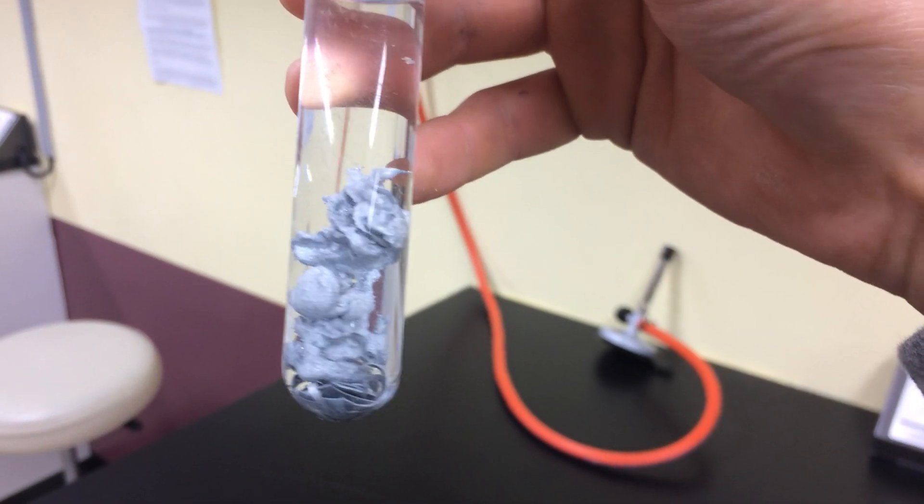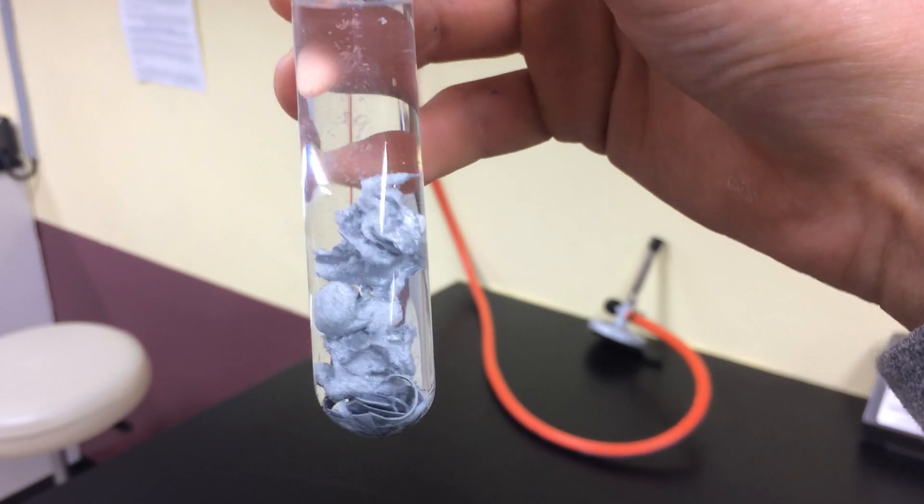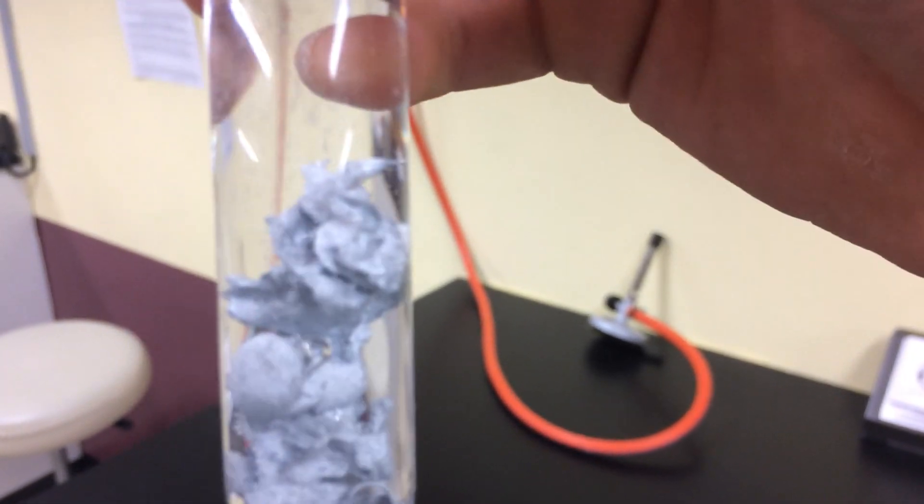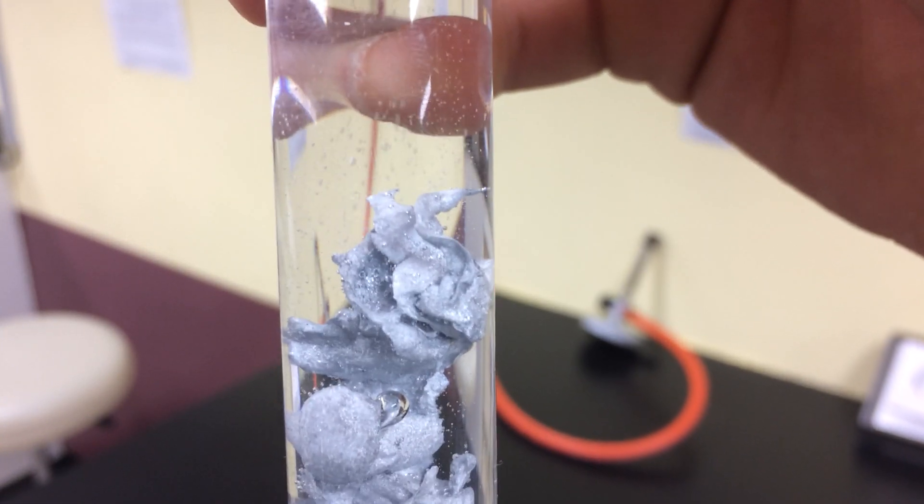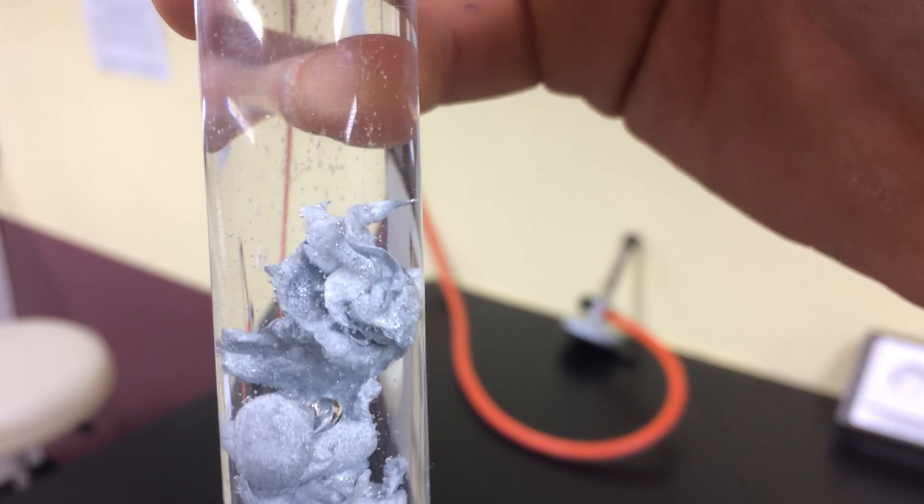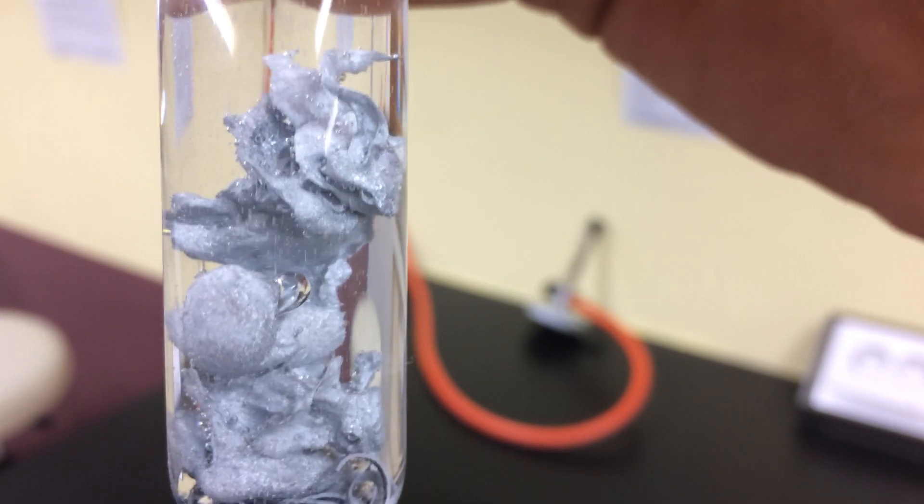Here you can see the zinc pieces reacting. If you look closely, you can actually see bubbles coming off. That is the gas, the H2 gas, the hydrogen gas that is coming off as a product when the zinc reacts with HCl.